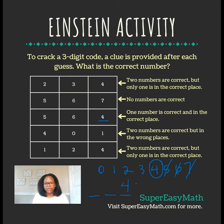The fourth clue says two numbers are correct but in the wrong place. We know the 4 is one of the correct numbers, and the other one has to be either 0 or 1.